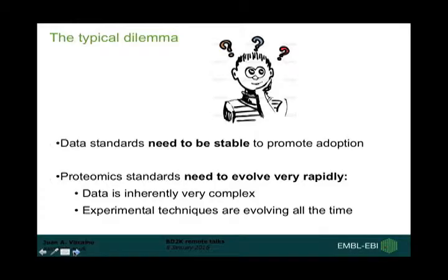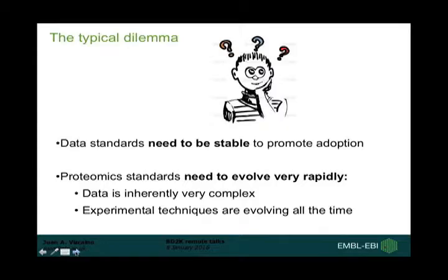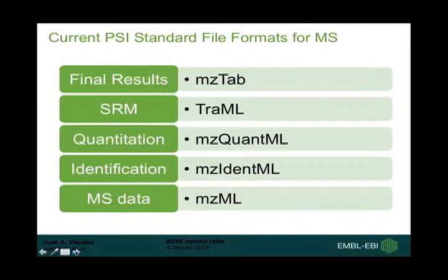I'm going to focus on the data standards provided by PSI that are used in mass spectrometry-based approaches. Something to be aware of is that when standards are developed by a community, there is a typical dilemma: data standards need to be stable to promote adoption, but proteomics standards also need to evolve rapidly because the data is complex and experimental techniques are constantly evolving. So most likely, the latest hottest new technique cannot yet be represented by data standards, because there needs to be some time for a technique to mature before standards are developed for it.